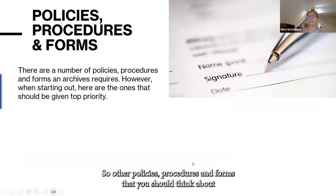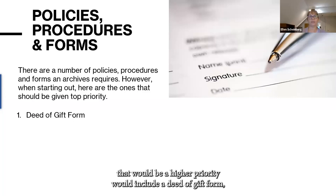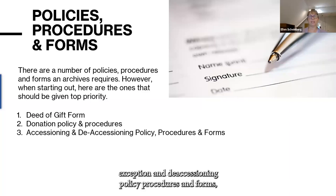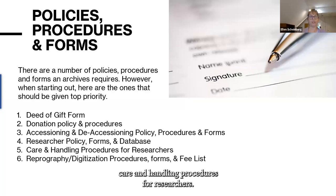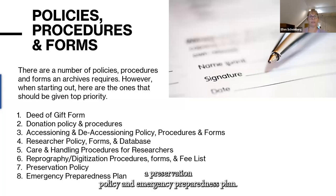Other policies, procedures, and forms that should be a higher priority include: a deed of gift form; a donation policy and procedures; accessioning and deaccessioning policy, procedures, and forms; researcher policy, forms, and database; care and handling procedures for researchers; reprography and digitization procedures, forms, and a fee list; and a preservation policy and emergency preparedness plan.